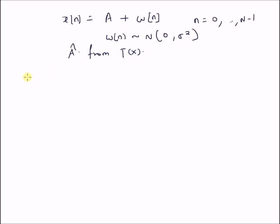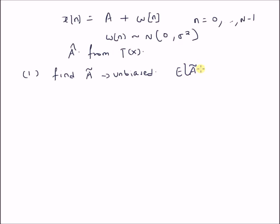The algorithm can be summarized as follows. Step one: we have to find an arbitrary estimator A-tilde which is unbiased, that is, the expectation of A-tilde minus A, the true value, should be equal to 0. The second step is we have to find the sufficient statistic T(x).